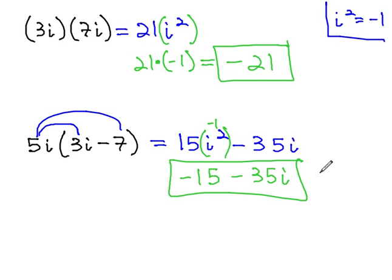Multiplying with i is exactly like multiplying with any other variable. The only thing to watch out for at the end, i squared is negative 1. And simplify with the negative 1 to get our final solution.